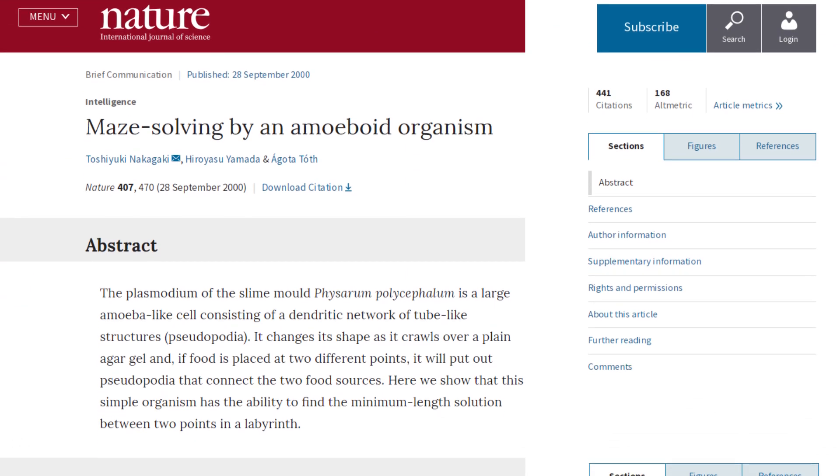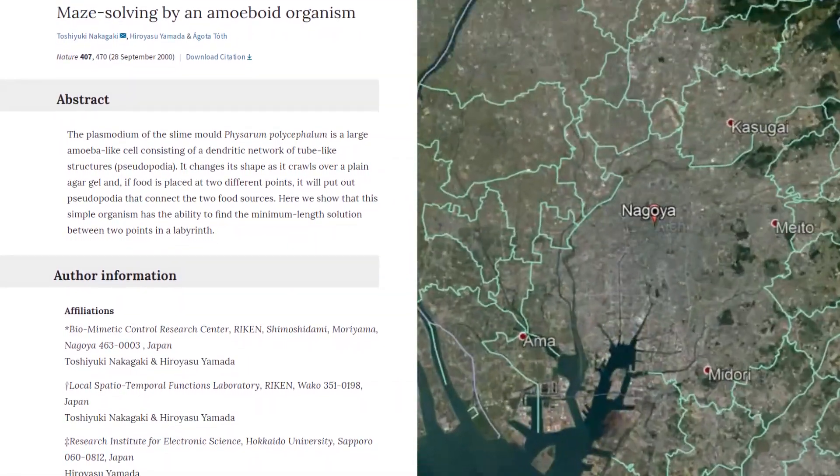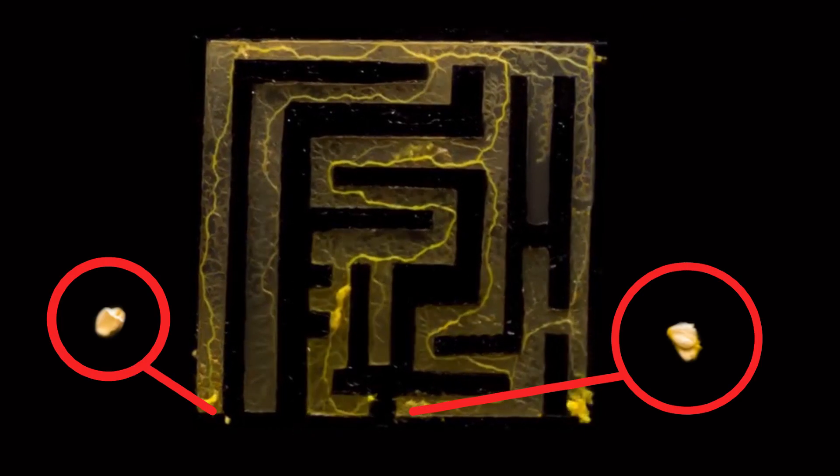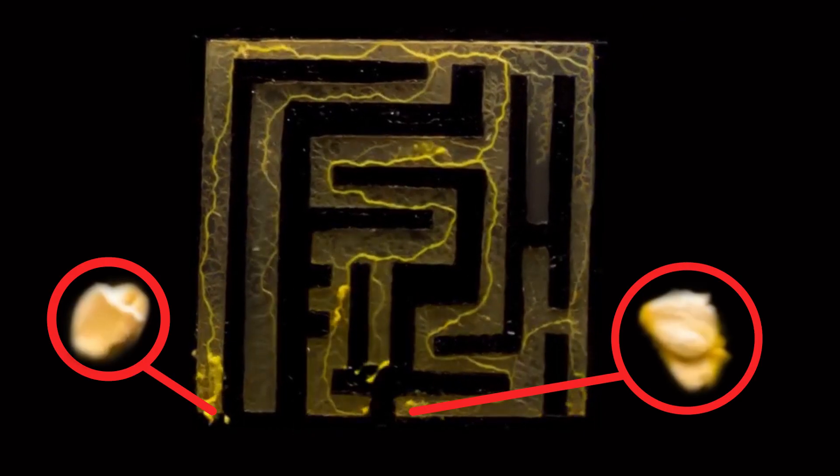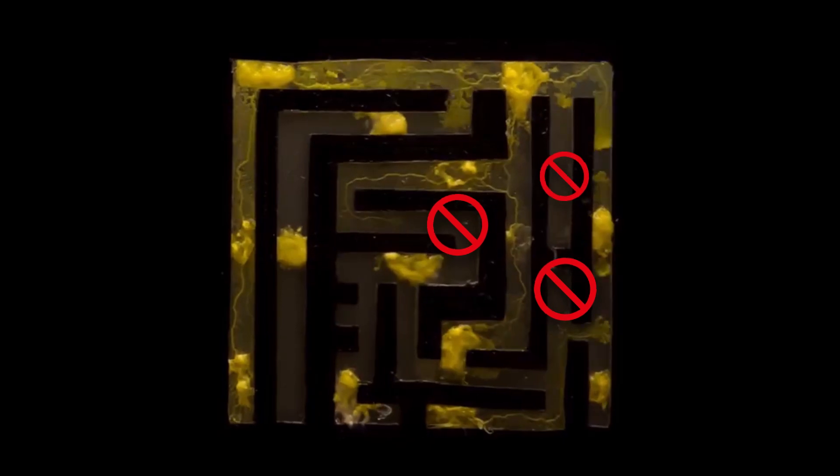In a 2000 study carried out at the Biomimetic Control Research Center in Nagoya, Japan, researchers placed slime mold inside a maze. At the end of the maze was slime mold's favorite dish, some oat flakes. Researchers watched as the slime mold spread itself out through the entirety of the maze, scouting it out. Not only did it find its way to the oats, it also retracted itself from the dead end paths of the maze, leaving a chemical, no entry sign for itself.